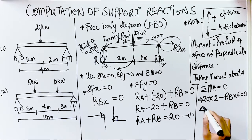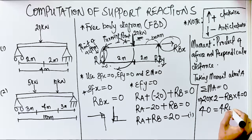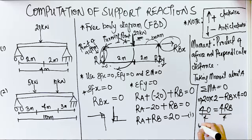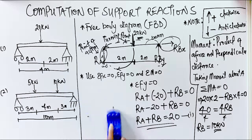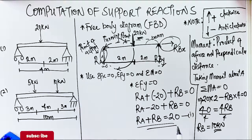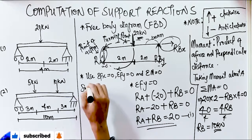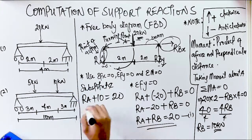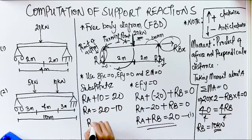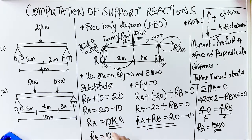From 20 × 2 = Rb × 4, we get 40 = 4Rb. Dividing both sides by 4 gives Rb = 10 kilonewtons. Substituting Rb into Equation 1: Ra + 10 = 20, so Ra = 20 − 10 = 10 kilonewtons. Therefore Ra = 10 kilonewtons and Rb = 10 kilonewtons. That is how to compute support reactions for a single point load.